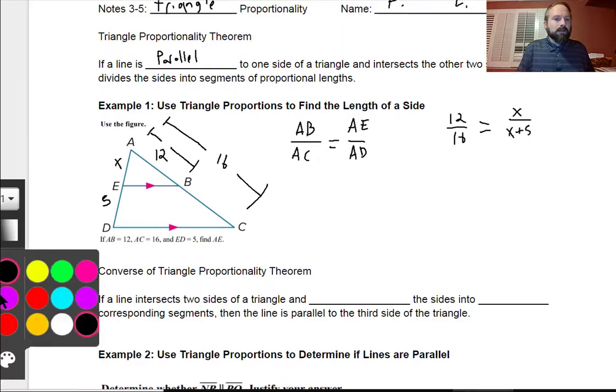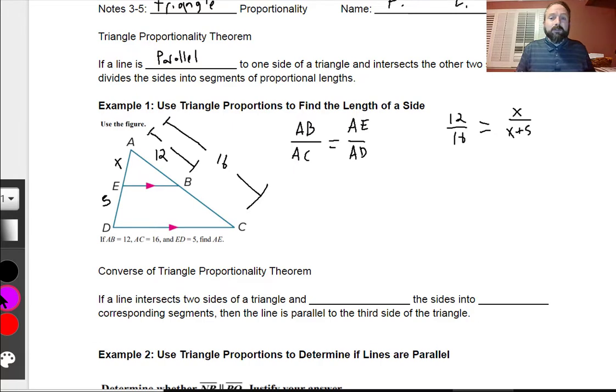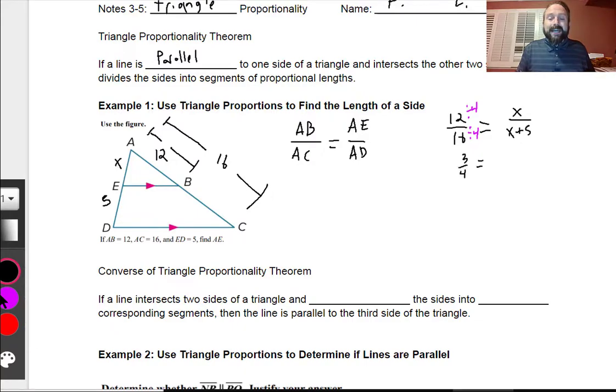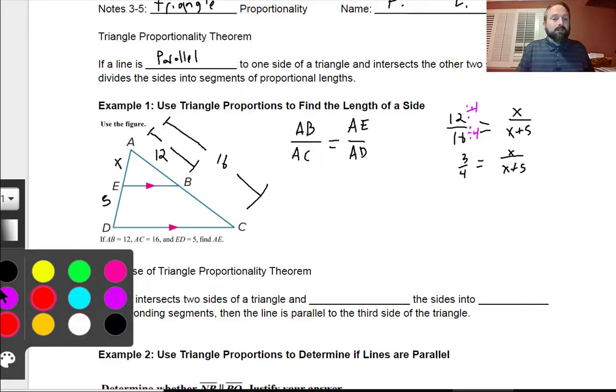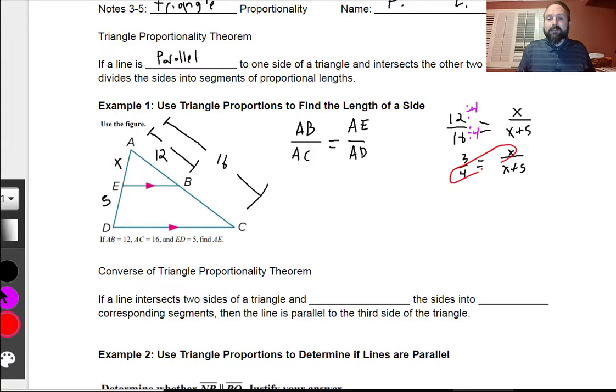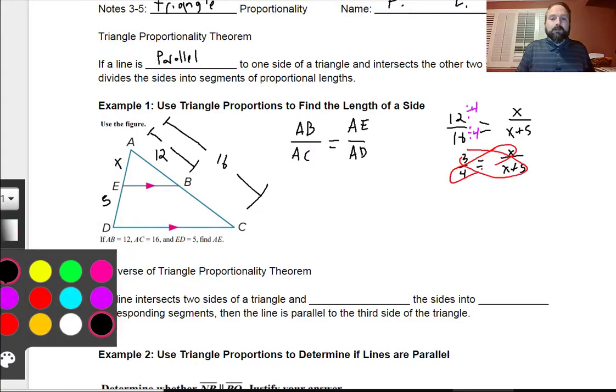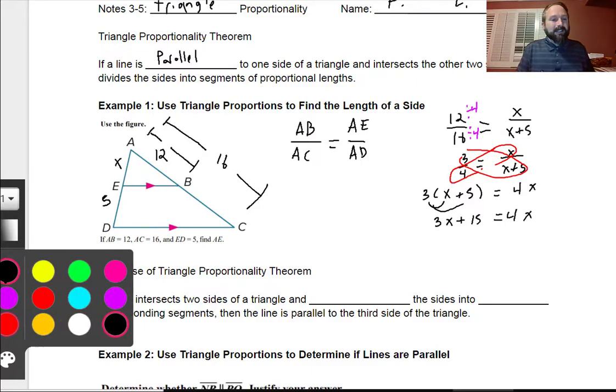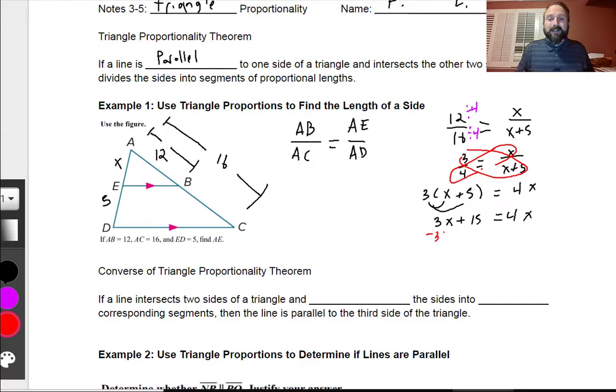So I can simplify this 12 over 16 by dividing by 4 on the top and the bottom, and I get 3 fourths. Now I can do this cross product right here. So I'm going to multiply this and this. When I multiply this out, I get 3 times the quantity X plus 5 is equal to 4 times X. Using the distributive property, we get 3X plus 15 is equal to 4X. Now we just need the subtraction property of equality on both sides, and we get X is equal to 15.